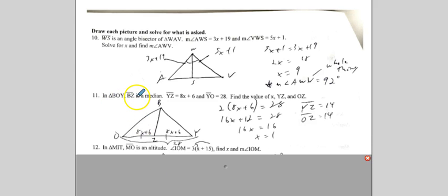Okay. Number 11, BOY. BZ is the median. So I just put B at the top. Meaning it's going to go to the midpoint of the other side, marking these two parts equal. Now, careful. Notice YZ, which is just this part right here, is 8X plus 6. YO is the whole thing. So don't put 28 over here and say this equals 28. It doesn't. These are both 8X plus 6 because they're equal to each other. Therefore, two of these equal 28. X equals 1. Plug this back in, and you get 14 for both.